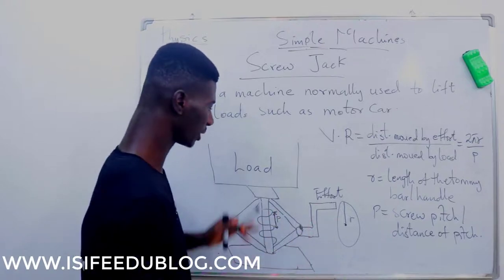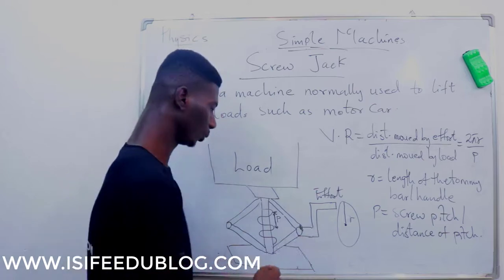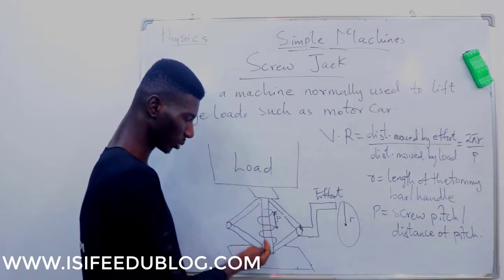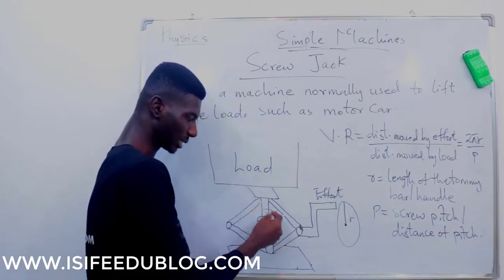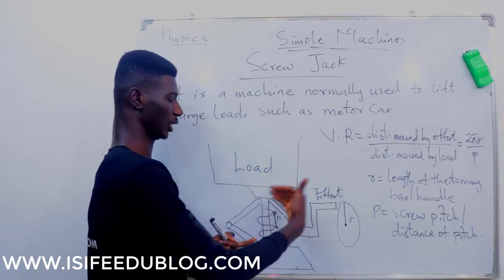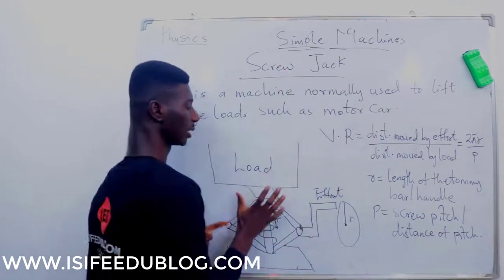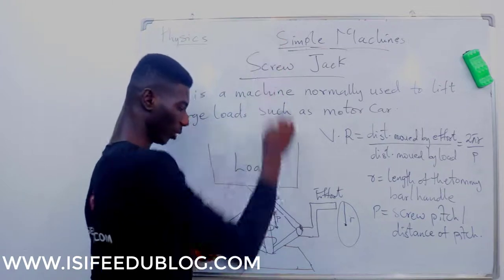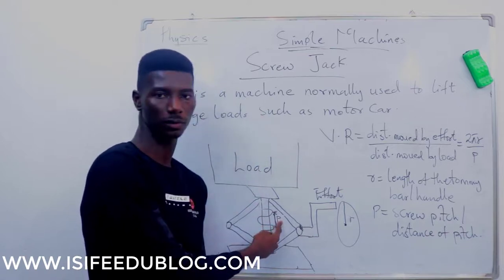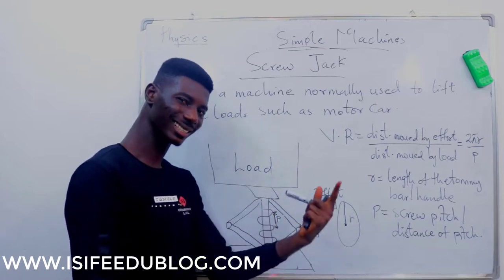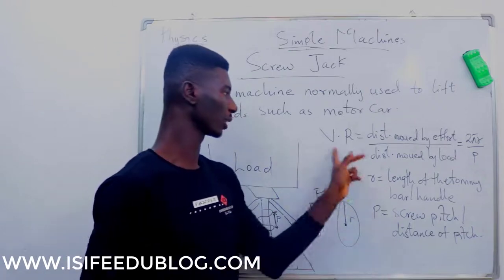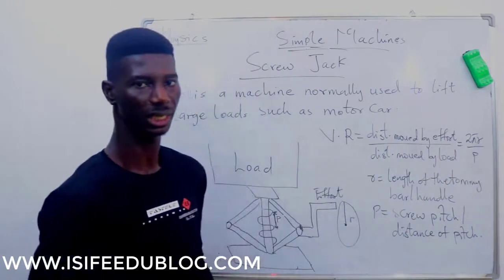Now, the distance moved by the load: if you bring out a screw jack, it's already compressed. As you rotate applying effort, the load keeps going up — it is expanding the pitch of the screw. As the pitch increases, the load goes up. So the distance covered by the load is the length of the pitch. Therefore, velocity ratio = 2πr divided by the pitch length.